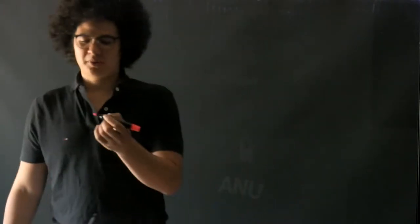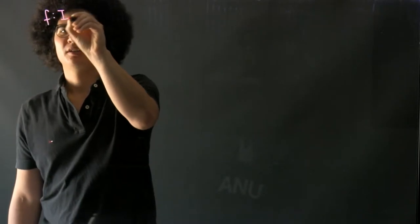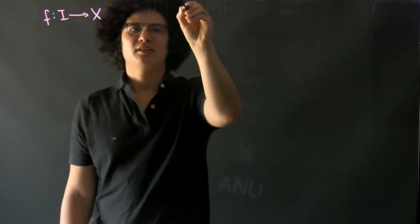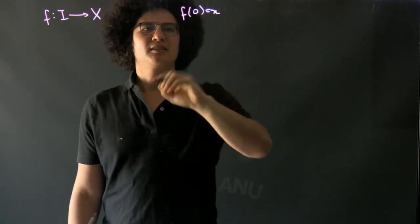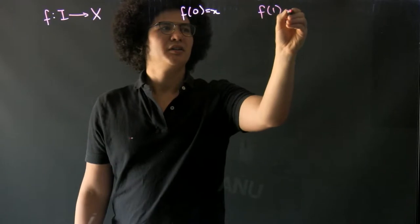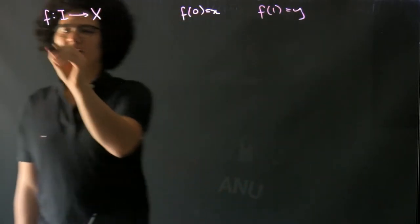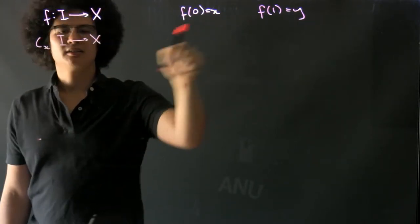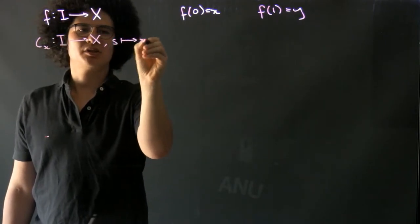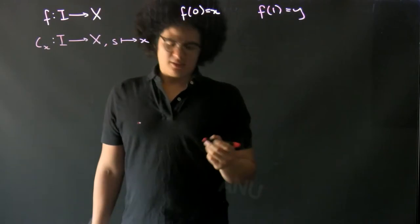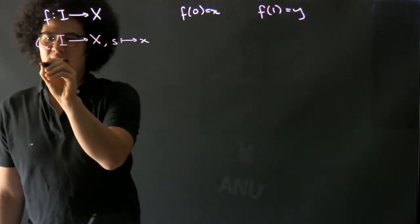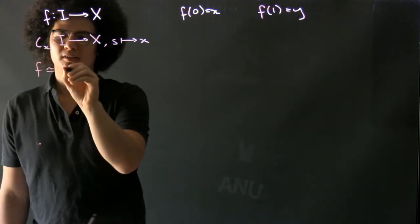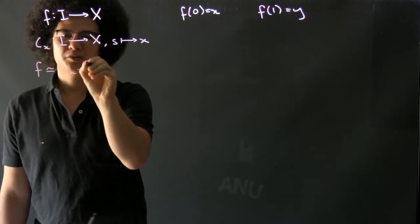We want to see that post-composing or pre-composing a path with a constant path is homotopic to the original path. We're going to start with some path in our space, where the start point of that path is x and the end point is y. Then we have a constant path at x which just sends every point in the interval to x. What we want to show is that our path is homotopic to composing the constant path with f.